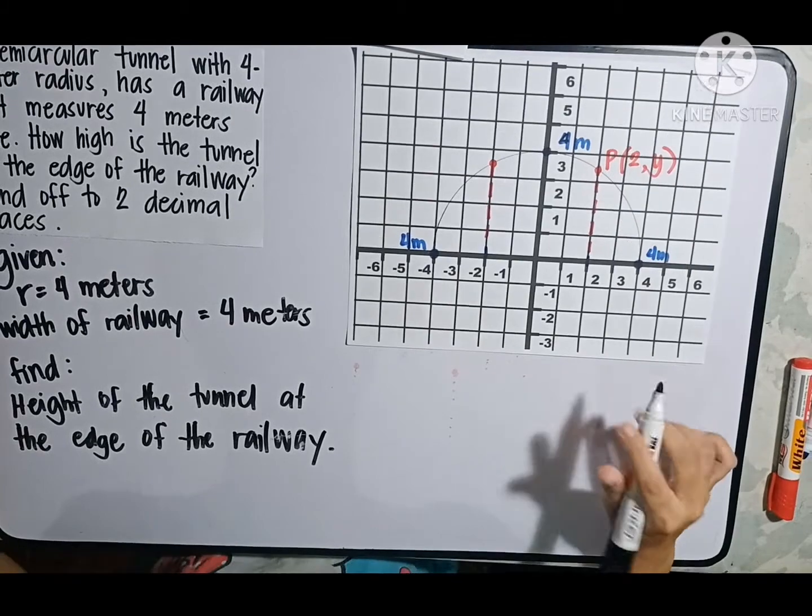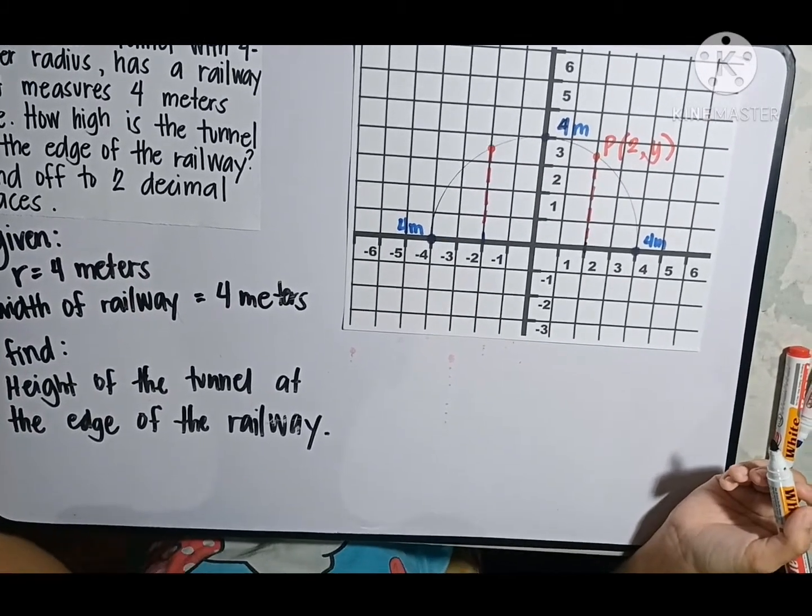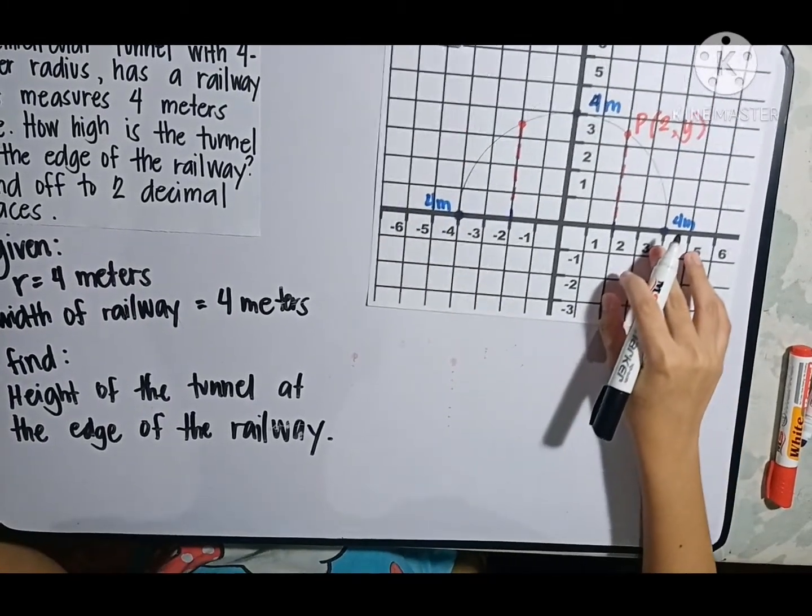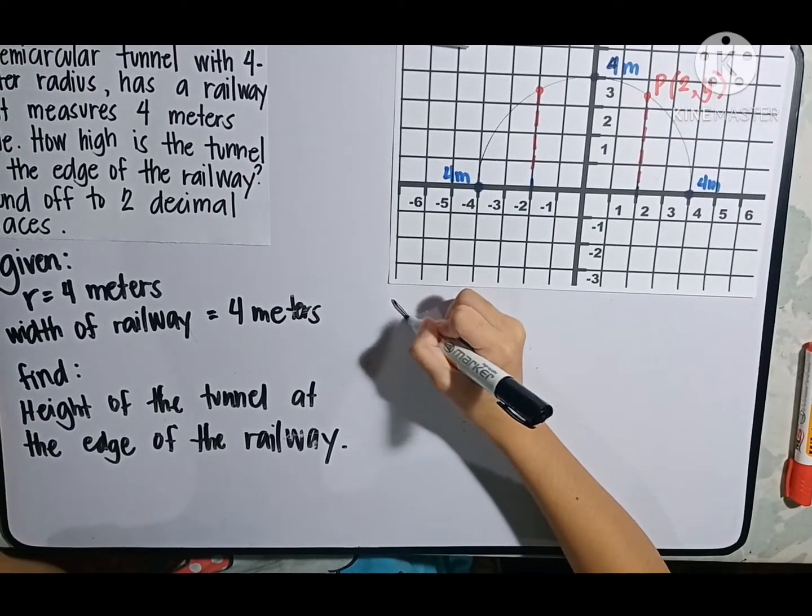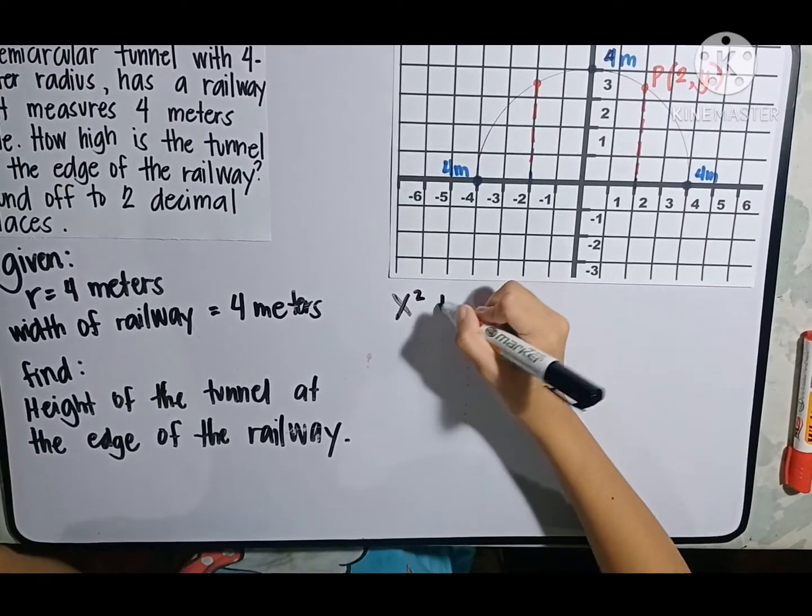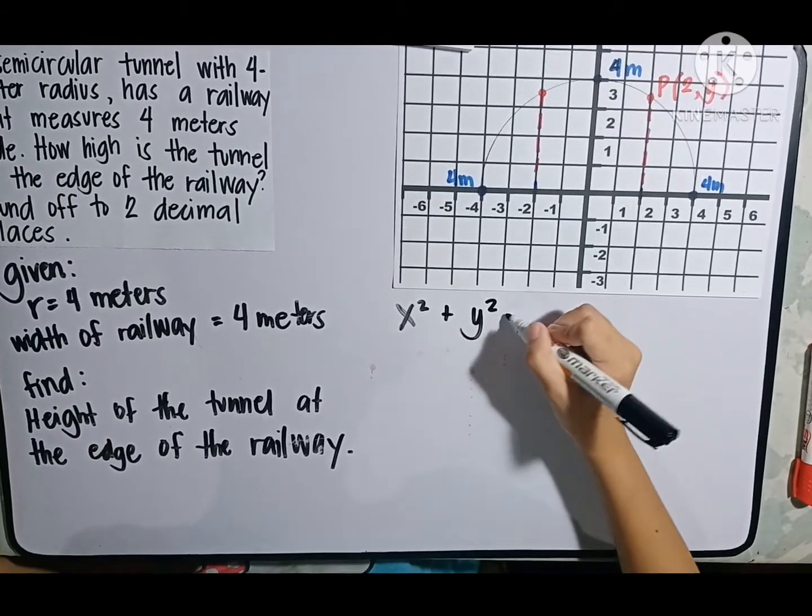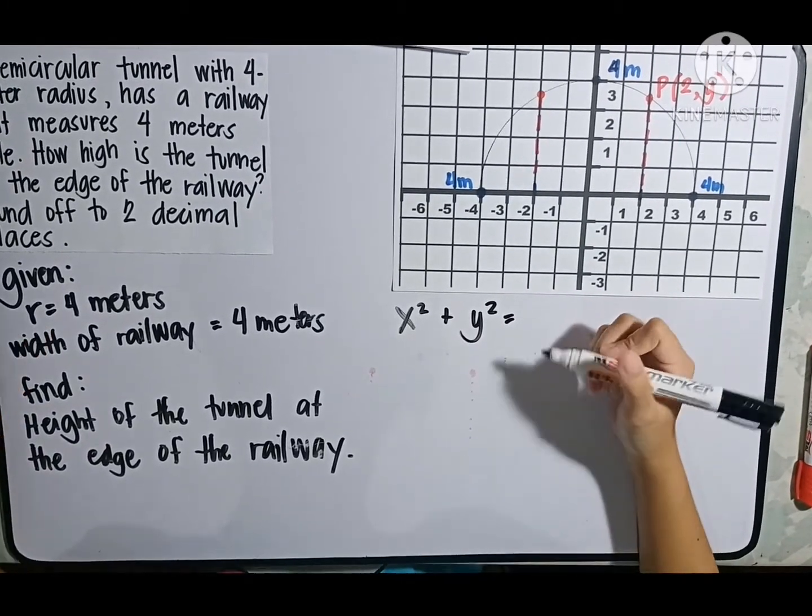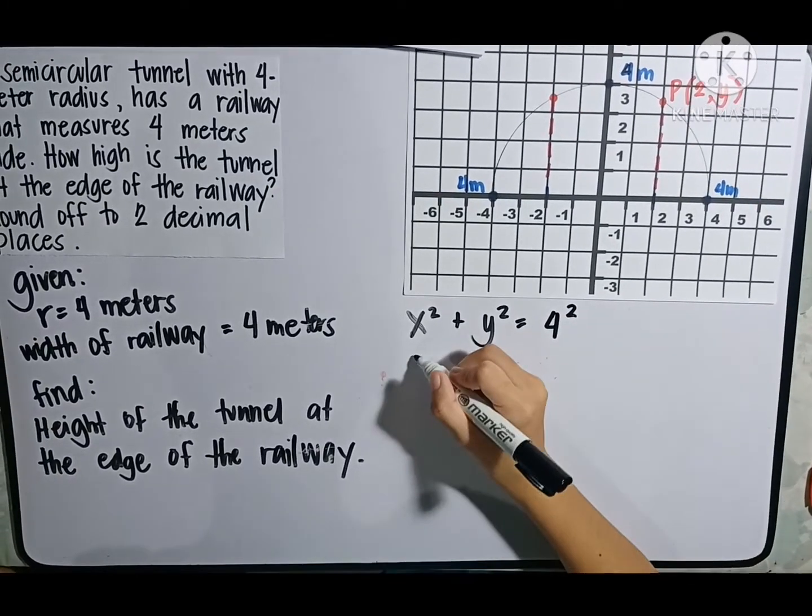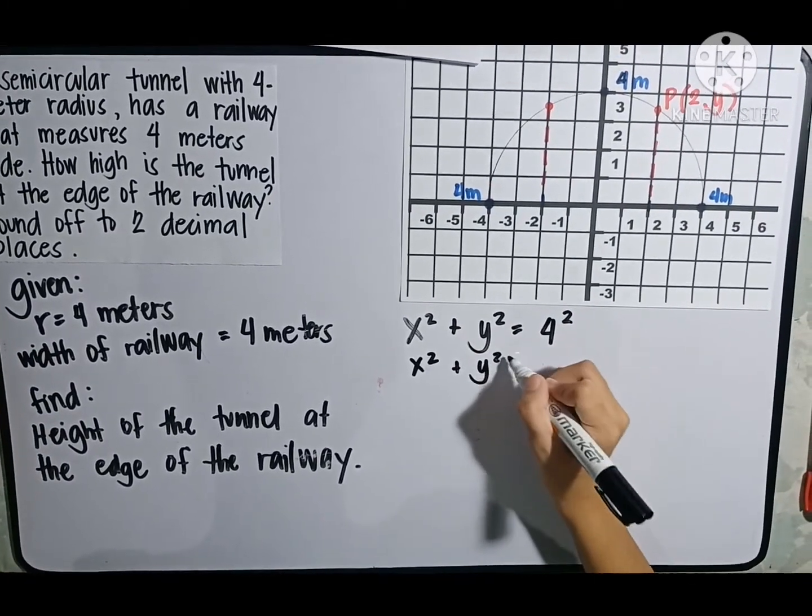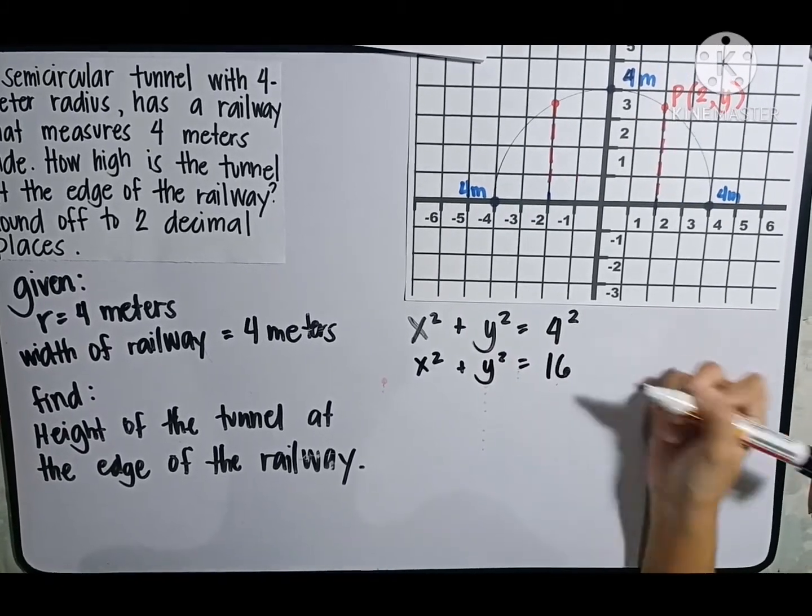So, from the given, let us write first what is the general equation of the circle. From that, I can say that the general equation is x squared plus y squared is equal to the radius 4 meters, 4 squared. So, it will be x squared plus y squared is equal to 16.